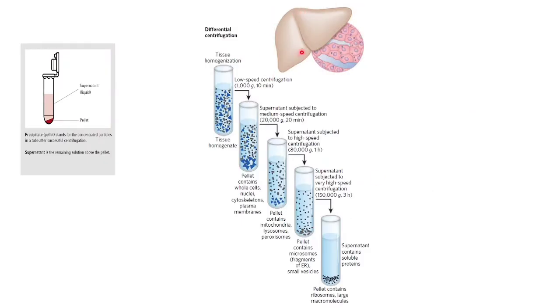This is the liver and this is the liver tissue. As you can see in this diagram, this liquid portion is called the supernatant and this solid portion which is settled at the bottom of this tube is called the pellet. Pellet stands for concentrated particles in a tube after successful centrifugation, and this liquid supernatant is the remaining solution above the pellet.